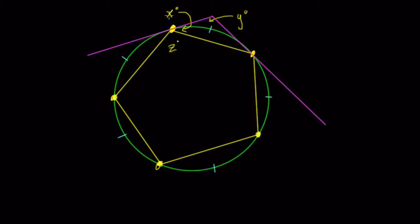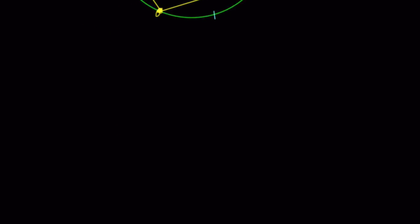Our goal here is to find the degree measure of x, y, and z. We need to know how to work with inscribed angles and tangent chord angles. An inscribed angle is an angle in a circle formed by two chords. Chords are lines that go across a circle but not through the center.